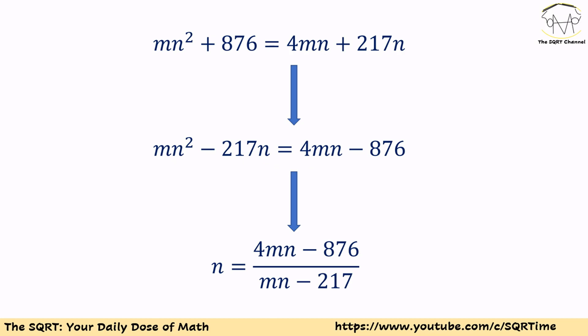To solve this problem we are going to start with the initial expression and rearrange it a little bit, so we will have mn² - 217n = 4mn - 876.